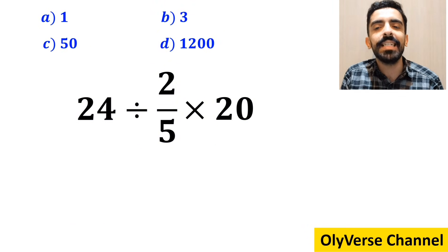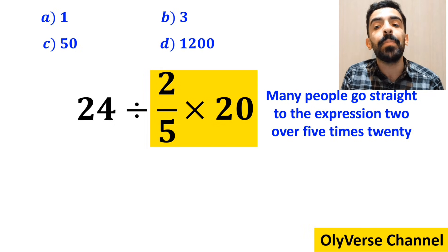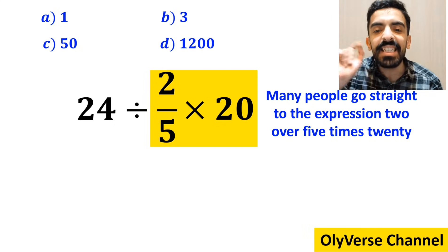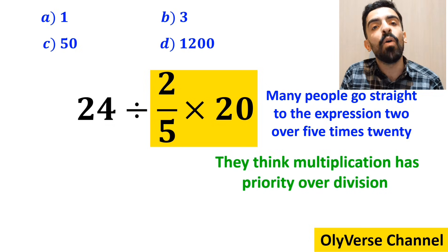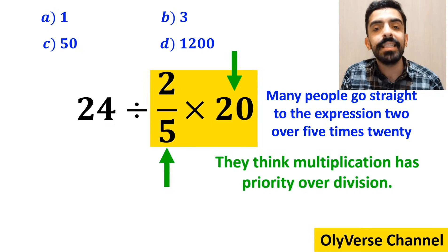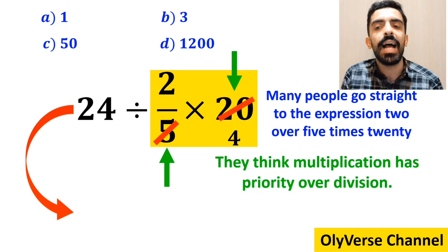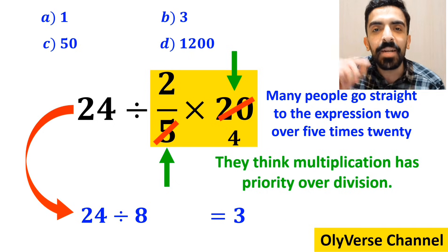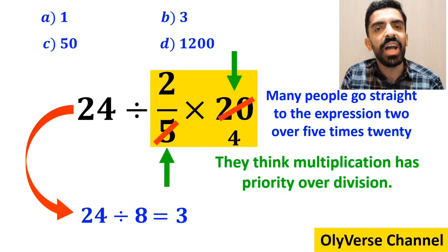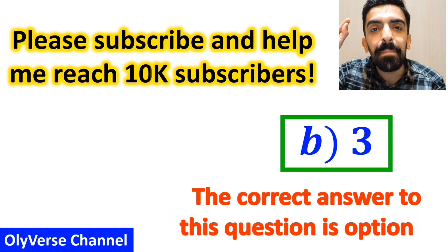At the beginning of solving this question, many people go straight to the expression 2/5 × 20, which I have highlighted in yellow, because they think multiplication has priority over division. And they say it's easy to simplify 20 with the 5 in the denominator, and write this expression as 24 ÷ 8, which finally gives them the answer 3. Then without any hesitation, they immediately say that the correct answer to this question is option B.